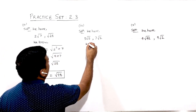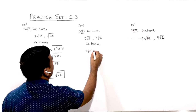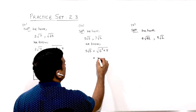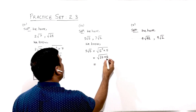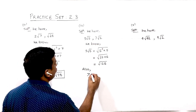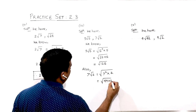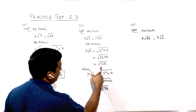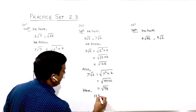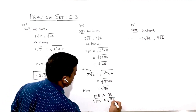Question number 4: we need to simplify both terms. 5√5 can be written as √(5² × 5) = √(25 × 5) = √125. Also, 7√2 can be written as √(7² × 2) = √(49 × 2) = √98. Now comparing: 125 is greater than 98, therefore √125 is greater than √98.